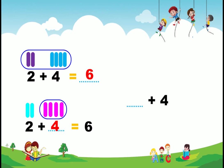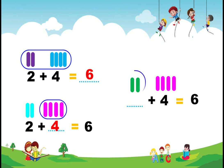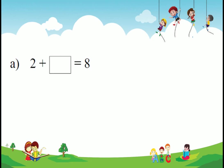Next activity: which number to add to 4 so the sum of two numbers is 6? 4 means 4 sticks: 1, 2, 3, 4. We add more: 5, 6. How many sticks did we add after 4? Only 2 sticks. So 2 plus 4 equals 6. In the same manner we do some more examples.